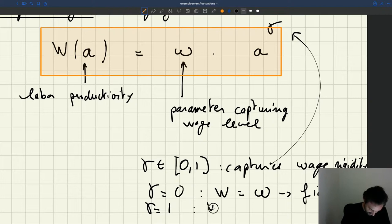Gamma is equal to 1, then we'll have that the wage is omega times A. This type of situation where the wage responds one to one to the productivity. So if productivity doubles, the wage doubles. That's what we call the flexible wage.